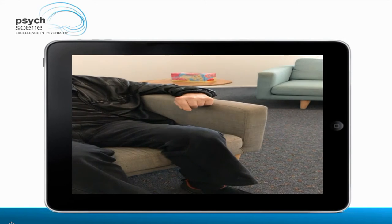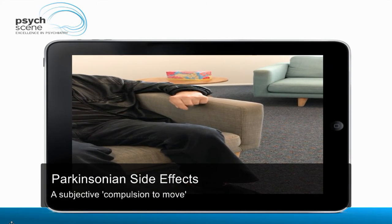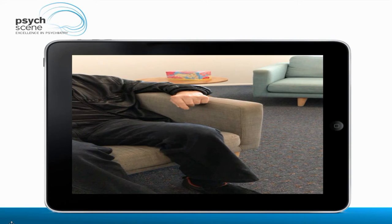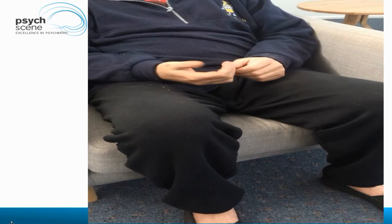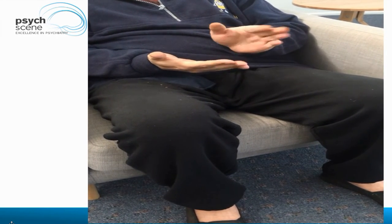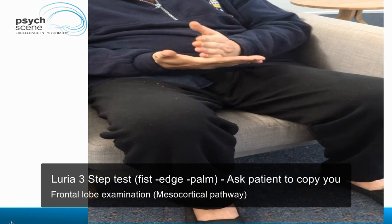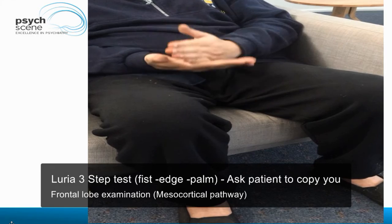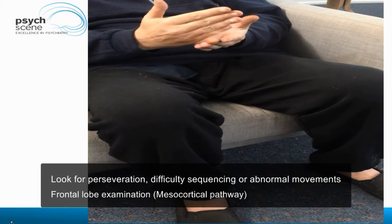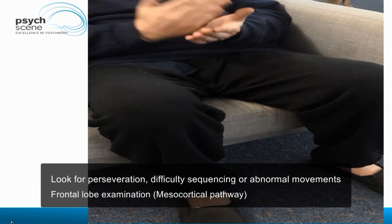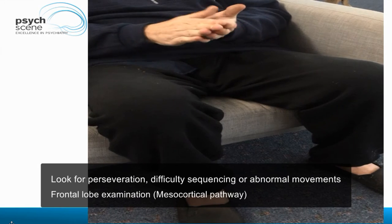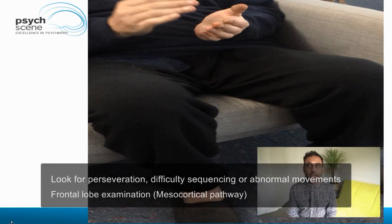Here are some examples of side effects. You can see a patient with a pill-rolling tremor, indicating dopamine blockade in the nigrostriatal pathway. In another clip, the Luria three-step test — fist, edge, palm — is being performed, and you can see the sequencing is difficult for this patient with a tremor present. This indicates dopamine blockade in the mesocortical pathway connecting to the dorsolateral prefrontal cortex, affecting the patient's executive function — specifically set sequencing — and this is a good test of frontal lobe functioning.